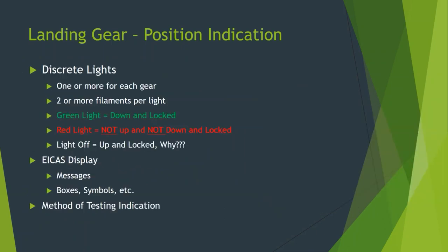These feed into our ability to see gear position. In older aircraft, these tended to be discrete lights — one or more for each gear — with two or more filaments or bulbs per light so if one burned out they would still operate. Green means down and locked. Red means not up and not down and locked — somewhere in between. The lights would turn off if the gear was up and locked, as part of the dark flight deck concept — when everything's normal for cruise flight, we don't want a bunch of lights distracting the crew.